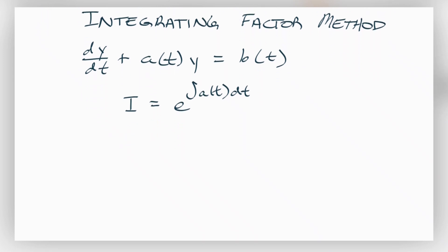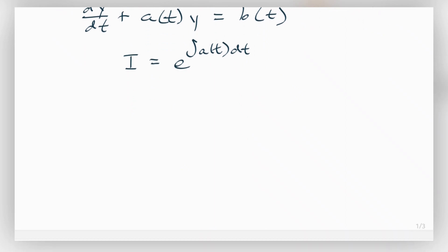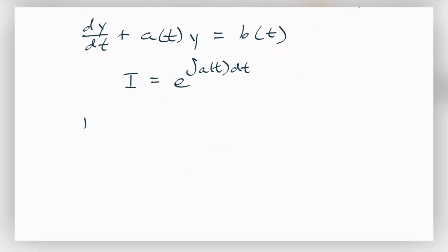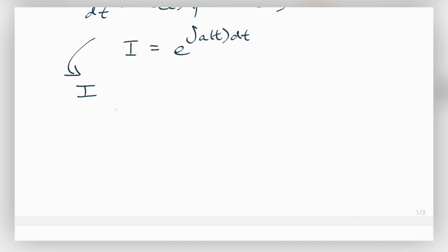For the equation above, I is going to be equal to e raised to the i over h-bar times V₀ times the integral with respect to s, where s is just a dummy variable. That evaluates to e to the iV₀t over h-bar.